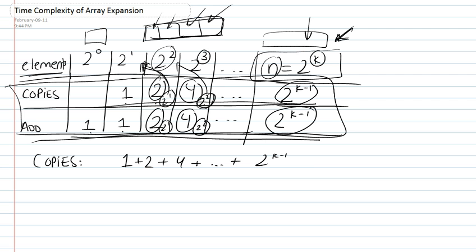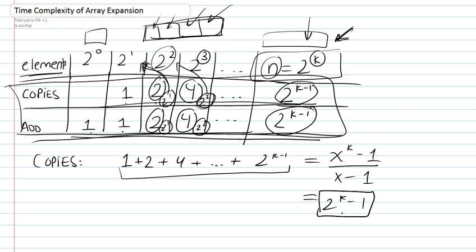And this is basically just the geometric series, and the formula for a finite geometric series is x to the k over x minus 1. And since the x is 2 in this case, it's just going to be 2 to the k minus 1. 2 minus 1 is just 1. So our summation, the sum of all of this, is basically 2 to the k minus 1. So this is the number of copies involved.